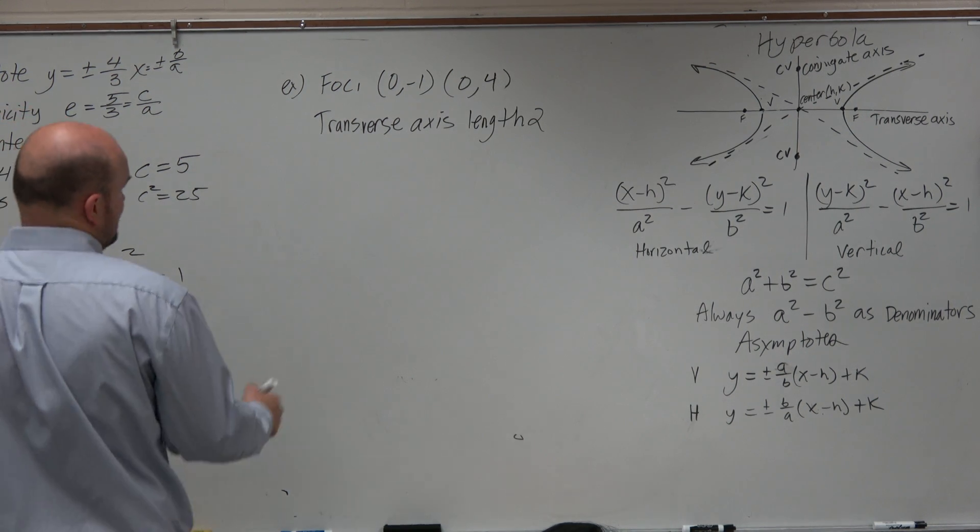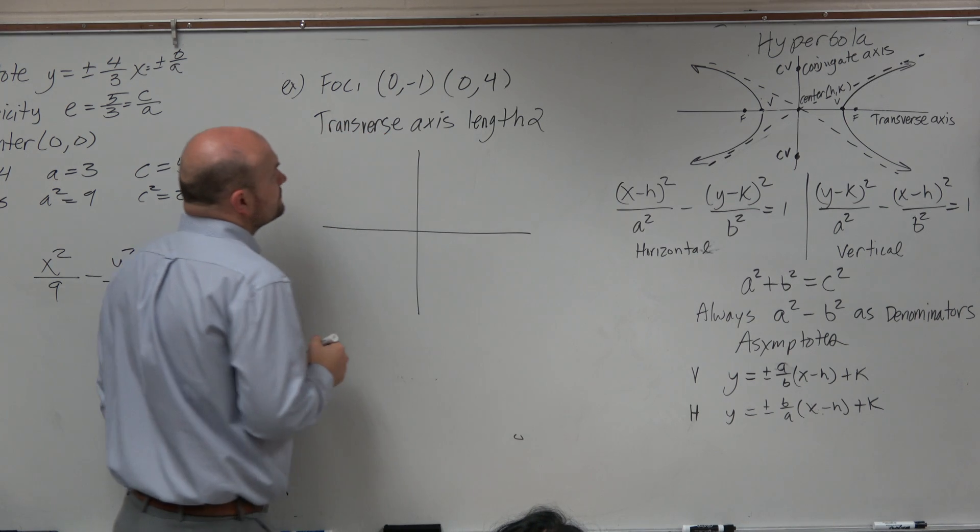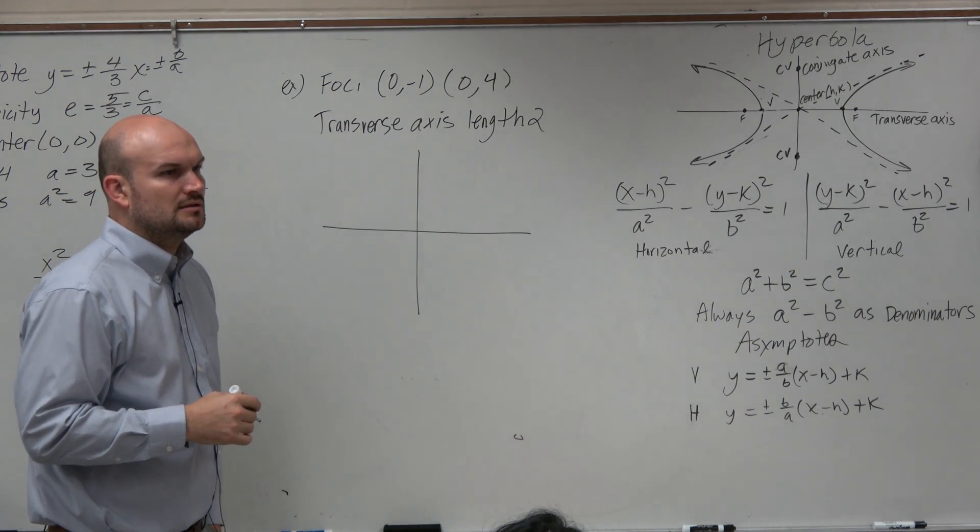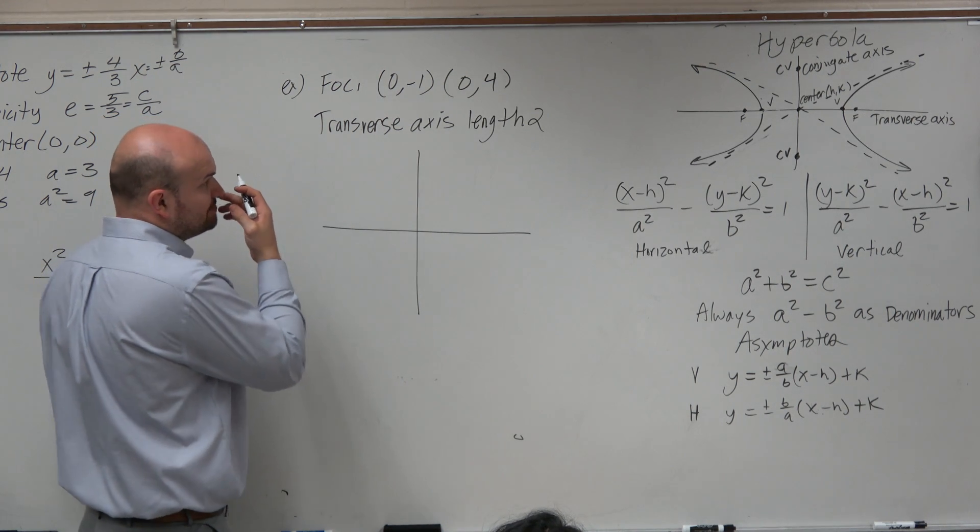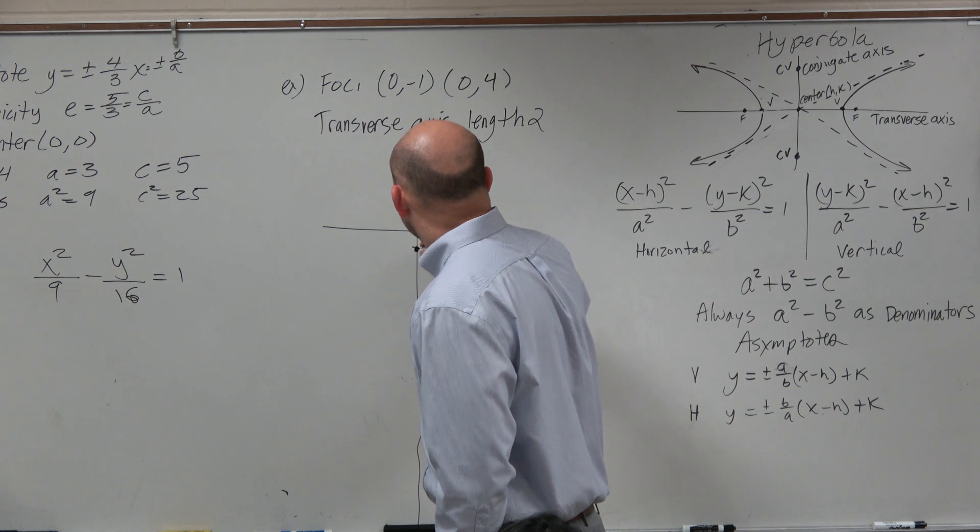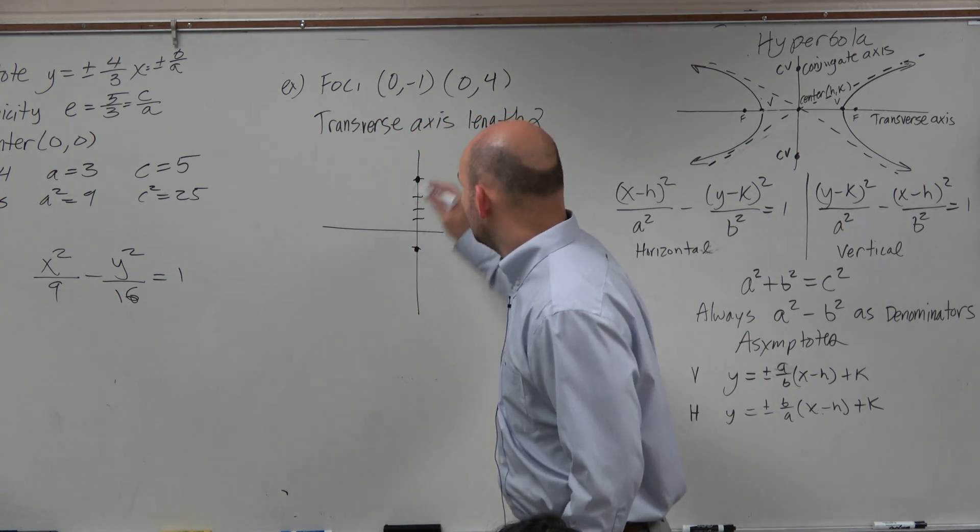So we're given the foci and the transverse axis length 2. So we're going from foci, which is at negative 1, and then 0, 4, 1, 2, 3, 4. So those are my two foci.